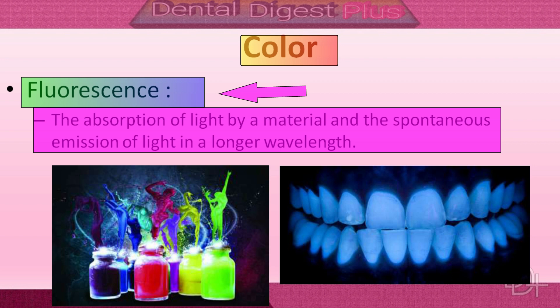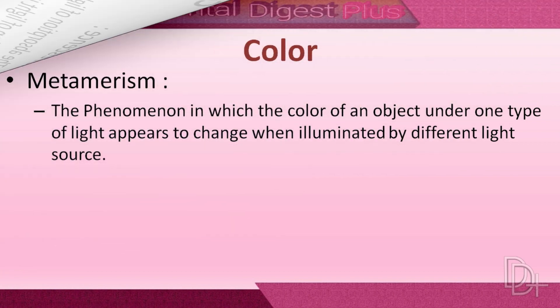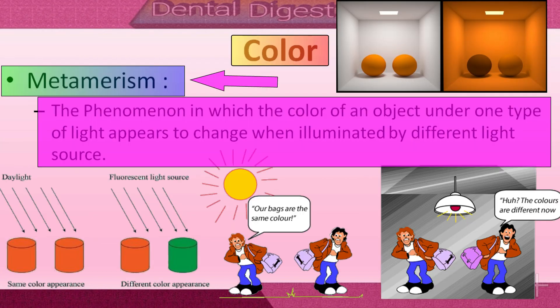Fluorescence is the absorption of light by a material and the spontaneous emission of light at a longer wavelength. In a natural tooth, it primarily occurs in the dentine due to the higher amount of organic material, making teeth appear bright and vital. Metamerism is the phenomenon in which the color of an object under one type of light appears to change when illuminated by a different light source — it is the change of color matching of two objects under different light sources. Daylight, incandescent lamps, and fluorescent lamps are common light sources in a dental clinic.